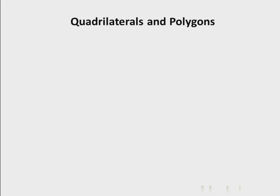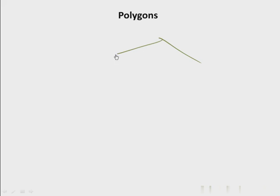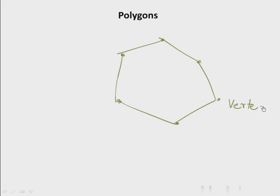Today's lesson is on quadrilaterals and polygons. We are familiar with some polygons like the triangle and the square. A polygon is a many-sided figure. This is a polygon — it is made up of straight lines joined together to complete the shape. Where the points meet are called the vertices of the polygon, and the lines are called the sides of the polygon.